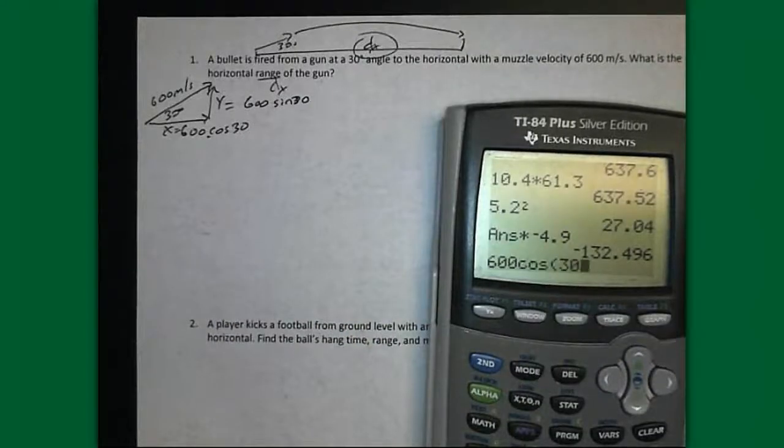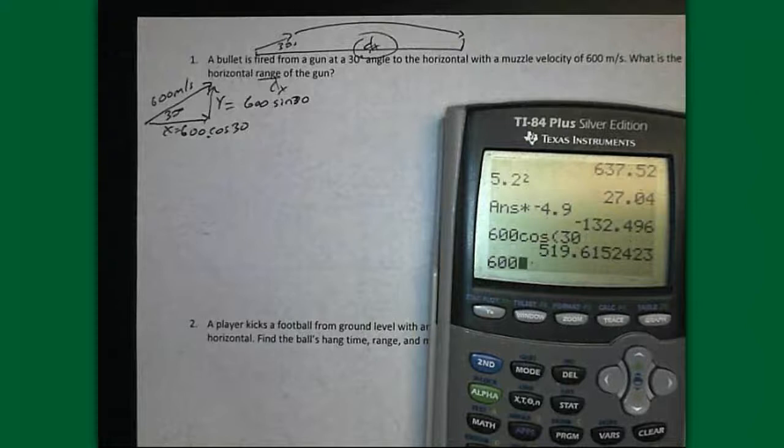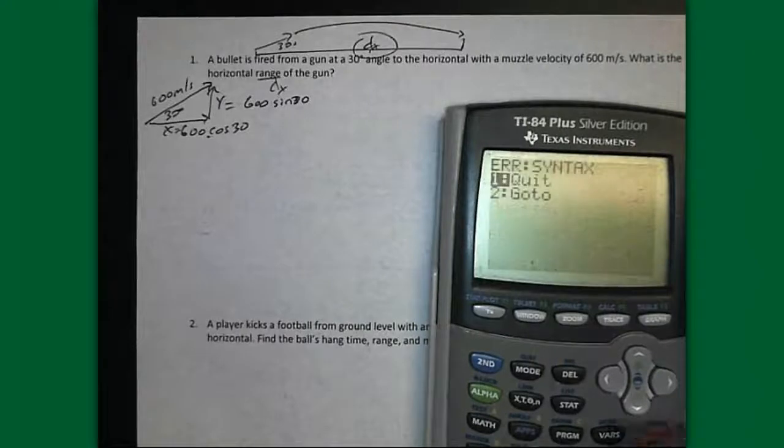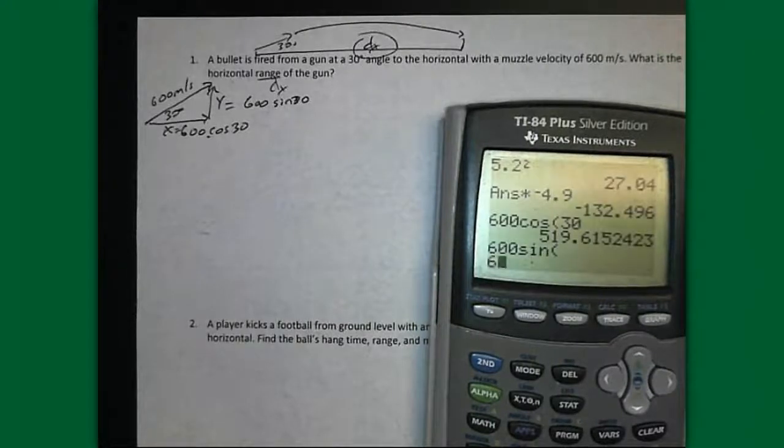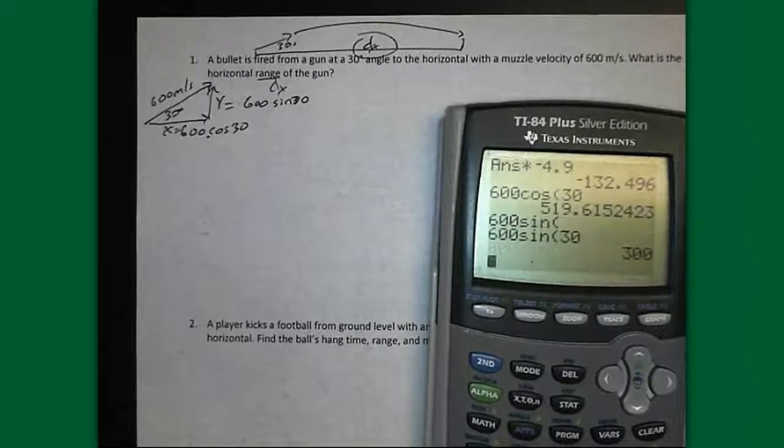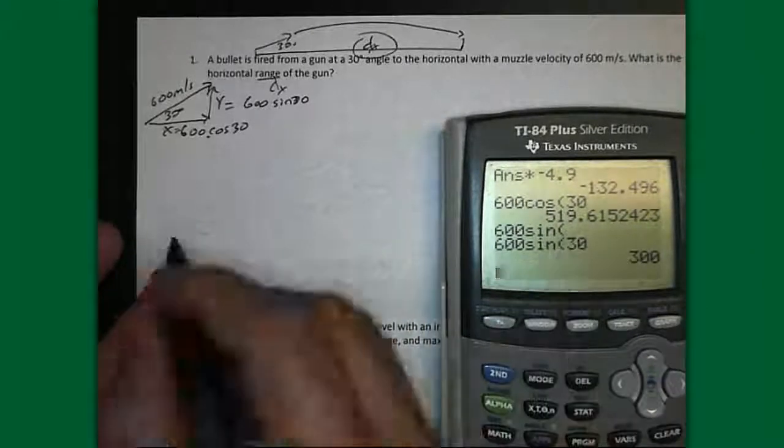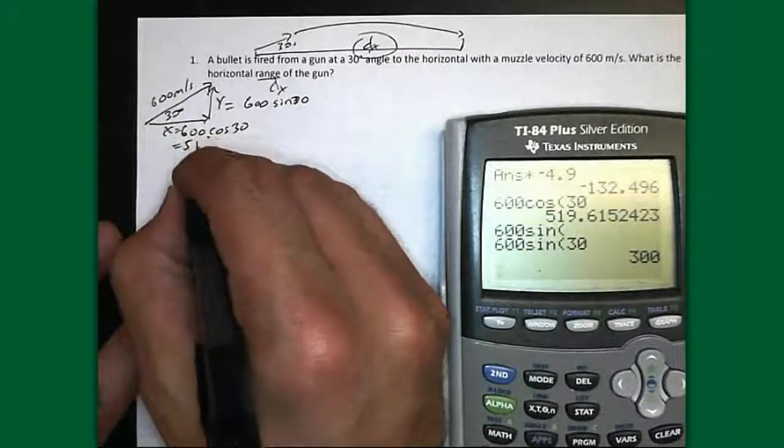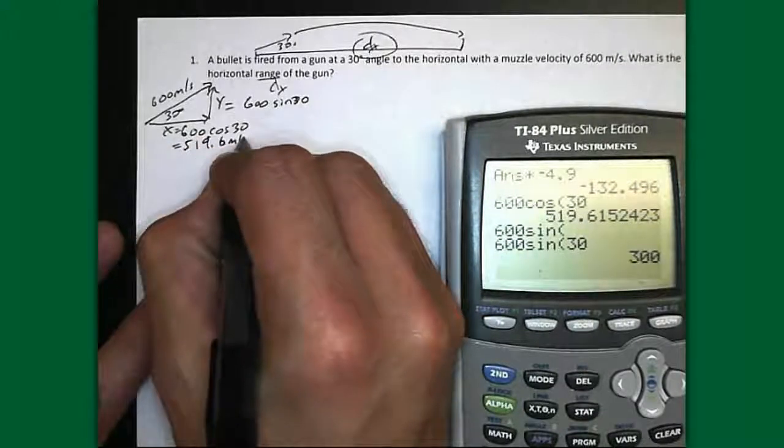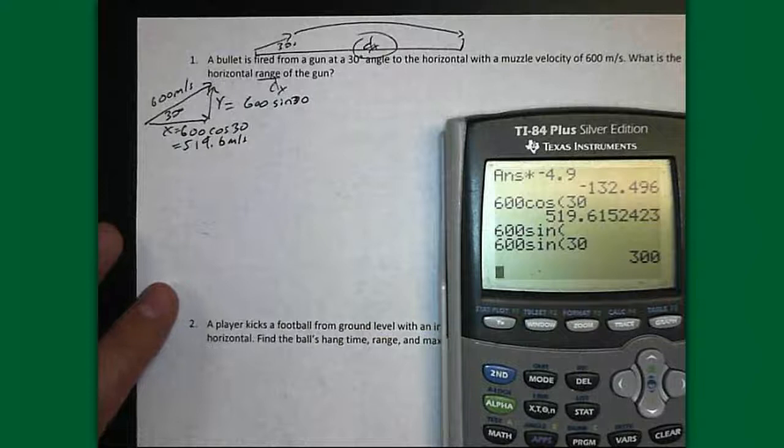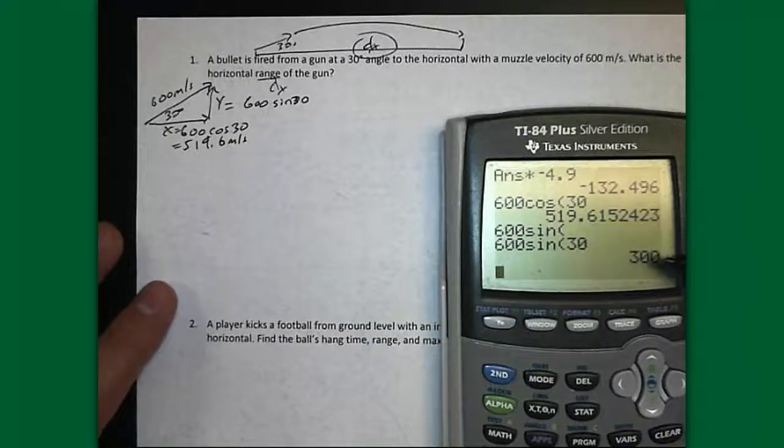600 cosine 30, that's the X component, gives us 519.6 X, and that's in meters per second. Sine gives us 300 even. That's the Y component.